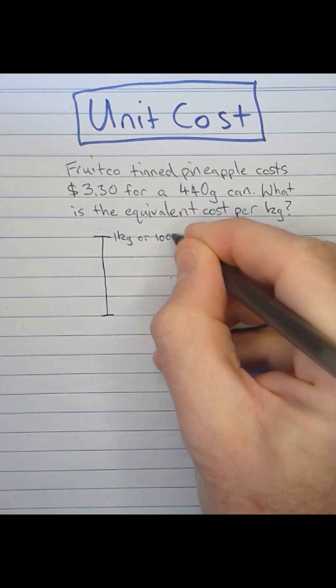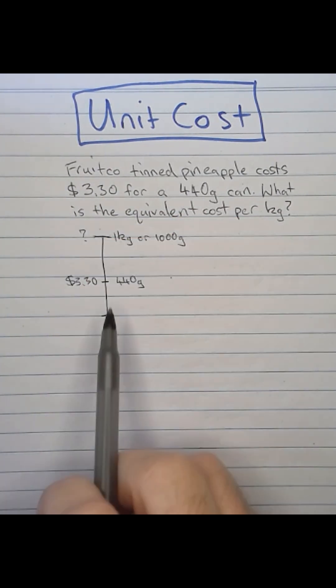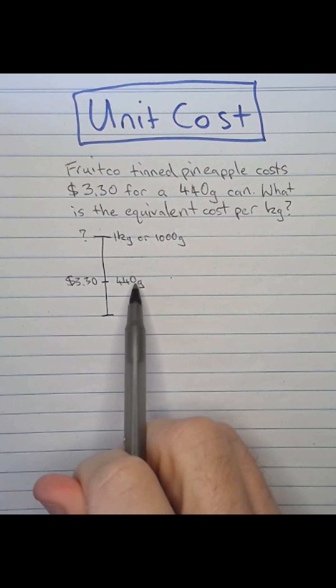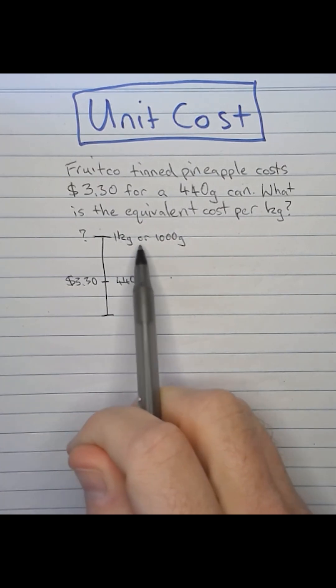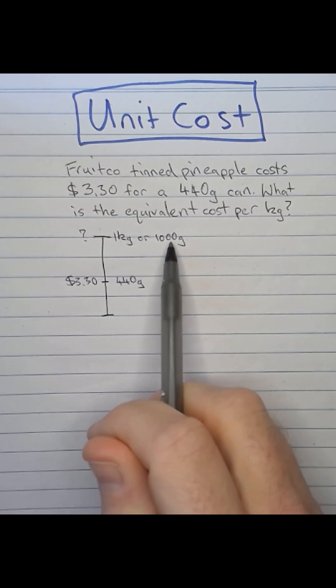I'm going to draw a dual scale number line to help me think about this problem a little bit. So in this problem we've got a 440 gram can of pineapple that costs $3.30 and we're asked to figure out what is the equivalent price for a kilogram or 1000 grams.